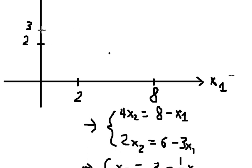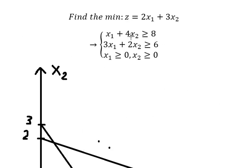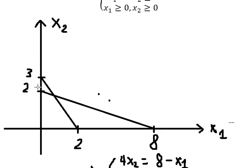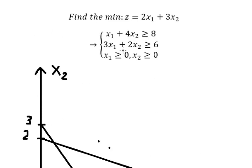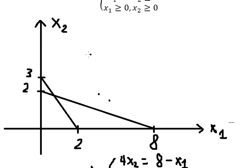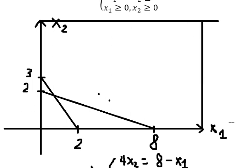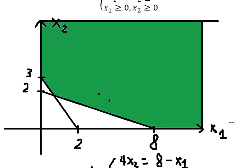Now we need to connect the values. The constraint has a greater than or equal sign, so for the first line the feasible area is to the right. If we test with point five, number five confirms we should be in the right area. Similarly for the second constraint, the feasible area expands upward and to the right.